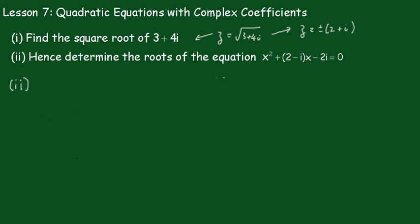Now in Part 2, it says: hence determine the roots of the equation x squared plus (2 minus i)x minus 2i equals 0. We've already established that z equals the square root of 3 plus 4i.